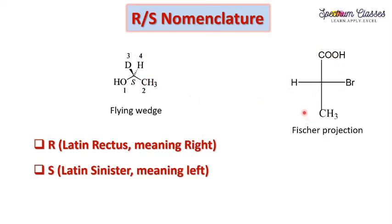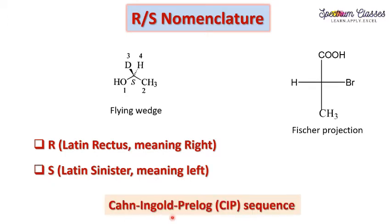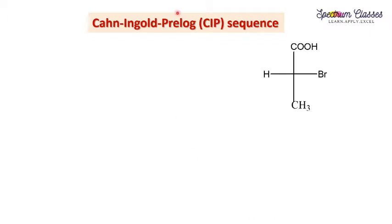To assign the spatial arrangement using R and S nomenclatures, we must first know what R and S mean. R is derived from the Latin word 'rectus' meaning right, whereas S is derived from the Latin word 'sinister' meaning left. We use the Cahn-Ingold-Prelog (CIP) sequence, also called the SIP sequence, which we have already discussed in our video on geometrical isomerism, so we will not discuss it in detail here.